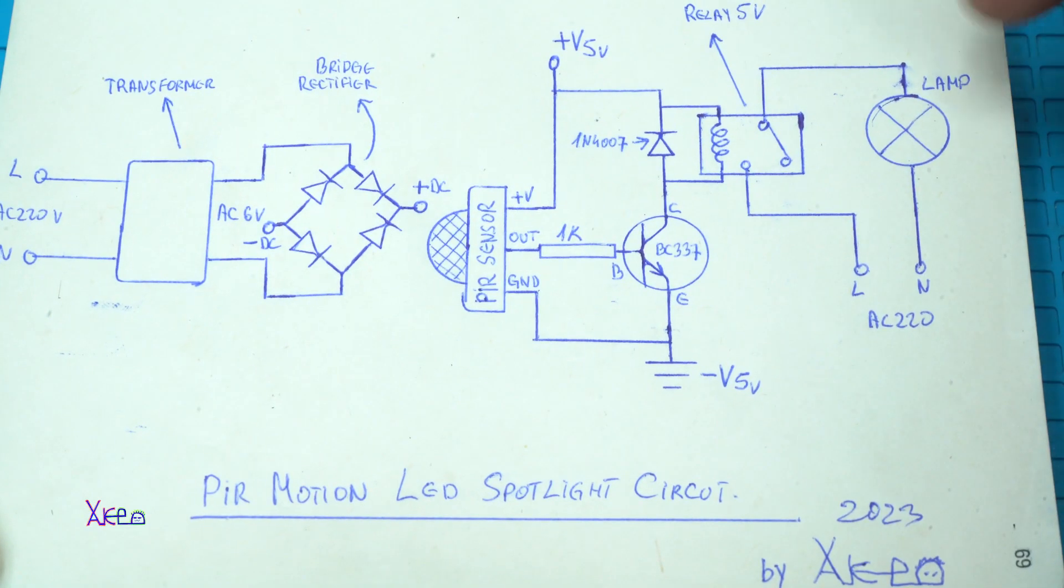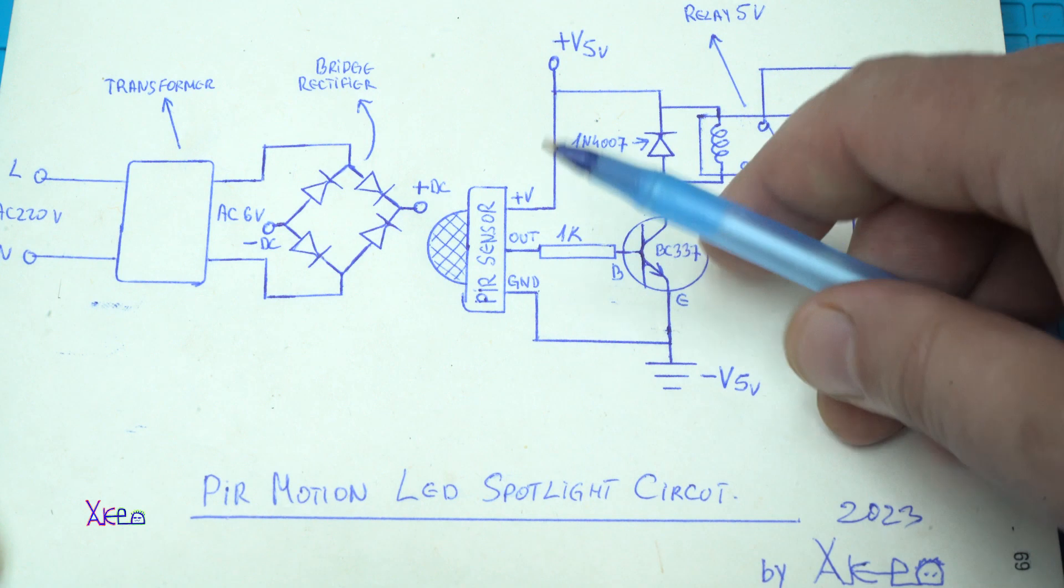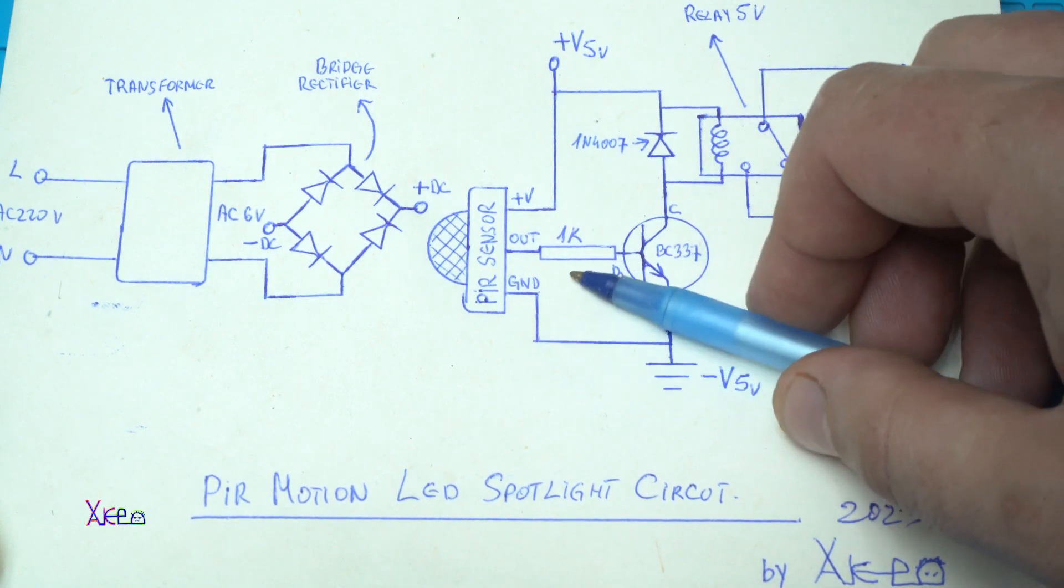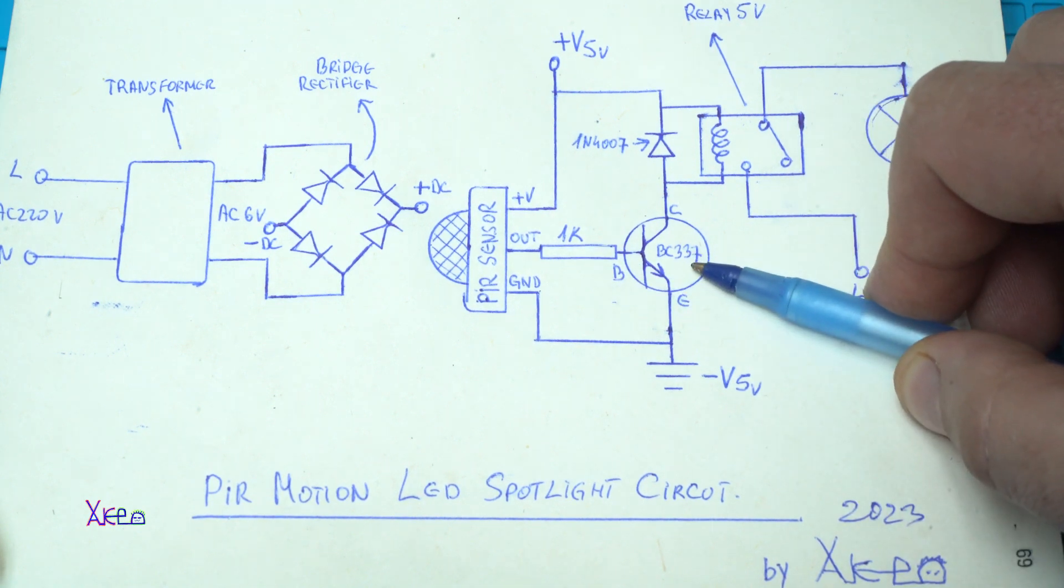For making the PIR motion circuit and activating some kind of lamp, you will need of course the main part, the PIR sensor. You need a 1kΩ resistor, one NPN transistor. In my case I am using BC337.